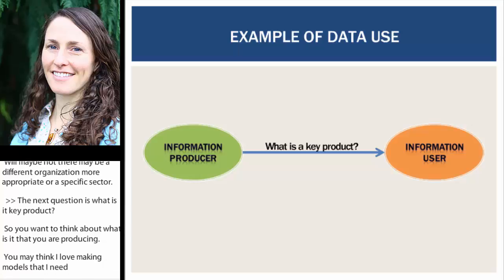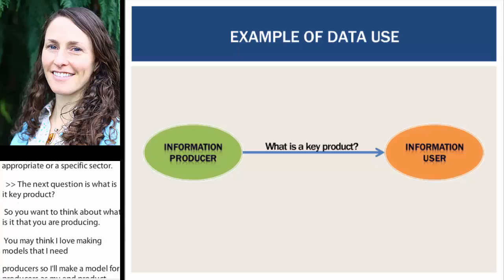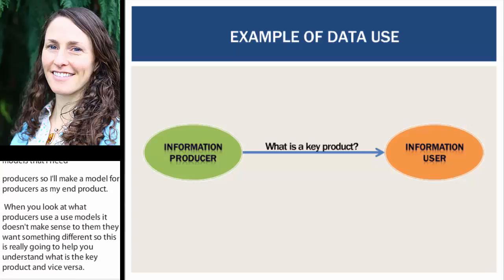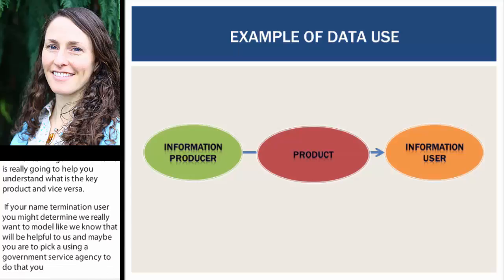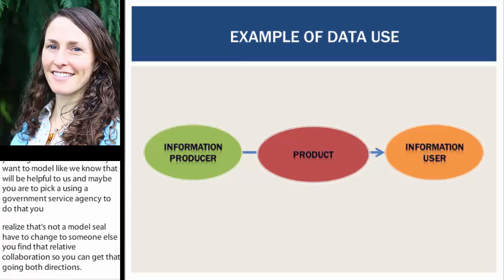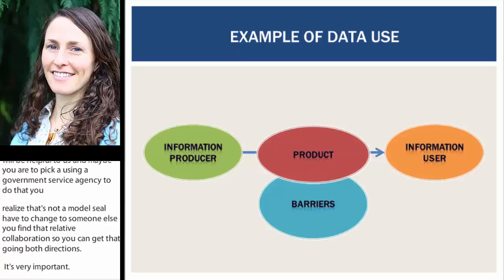And vice versa — if you're an information user, you might determine that a model is really going to be helpful to you. Maybe you're typically using a government service agency for that and you realize they don't put out models, so you're going to have to change to someone else. Find that relevant collaboration so you can get that going in both directions. It's about finding the totally appropriate product between the information producer and the information user, after finding the appropriate audience.